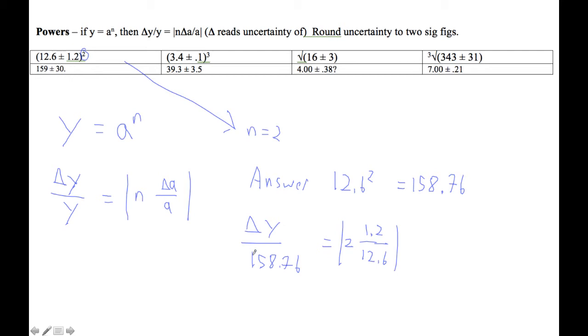And I'm going to do the same thing I always do. 158.76 times 2 times 1.2 divided by 12.6. I get 30.24.